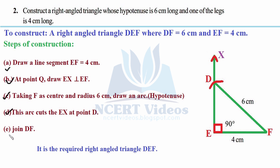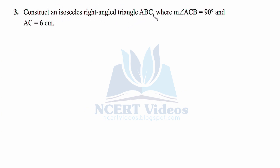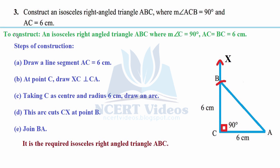Third: construct an isosceles right-angled triangle ABC where the measure of angle C equals 90 degrees and AC measures 6 centimeters. The aim is to construct an isosceles triangle, right-angled at C. Since it is an isosceles triangle, the two equal sides are AC equals BC equals 6 centimeters — the opposite sides of an isosceles triangle are equal.